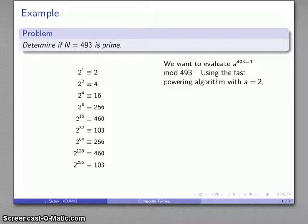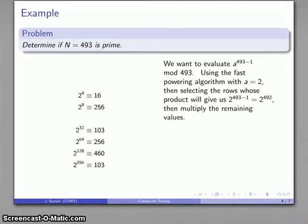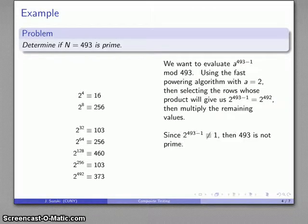I'll use the fast powering algorithm, find the powers of 2 mod 493, and select the ones that I need. Multiply them together and I get 2 to the power 492 is congruent to 373. And because it's not congruent to 1, then 493, whatever it is, is not prime. Now I know it's composite, but I don't actually know what the factors of 493 are at this point.